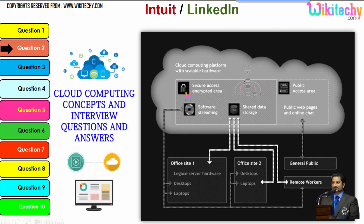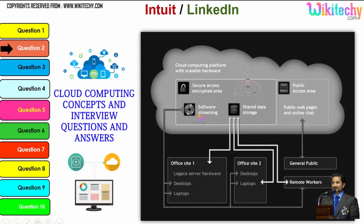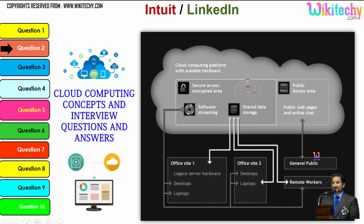Cloud computing has a public access area — public web pages for end users — as well as secure data access, shared data storage, and software streaming. Companies can use it as a private kind of environment, and the public can also use it to access web pages or websites. This is how cloud computing works across both public and private access models.